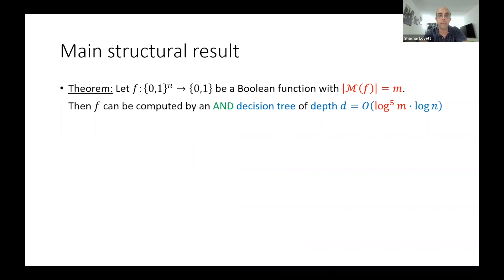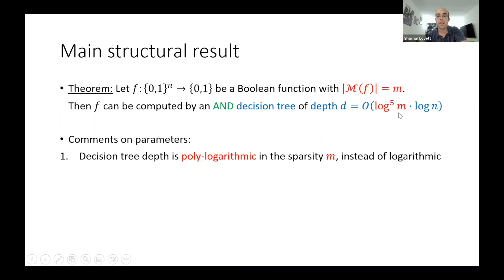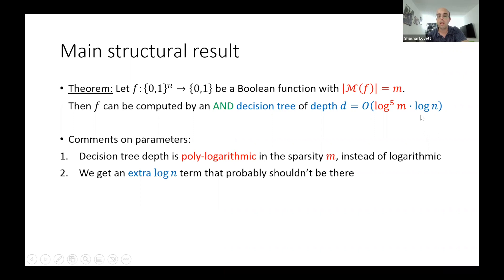Here's our main structural result. Take any boolean function. If its number of monomials is m, it can be computed by an AND-decision tree of depth poly-log m times log n. One thing that's really annoying is this extra log n factor — it depends on the number of variables. It prevents various applications that require no dependence on the number of variables. Getting rid of this log n factor is an interesting open problem; we conjecture the right answer is order log m, matching the AND-decision tree example.